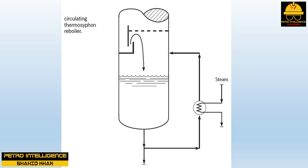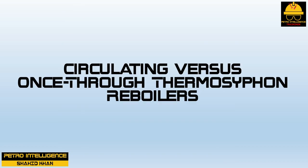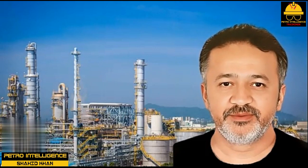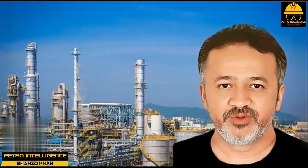However, should the tower bottom liquid level reach the reboiler return nozzle, thermosyphon flow will be restricted or even stop. This will reduce the reboiler heat duty and cause the tower pressure to drop, sometimes causing the tower to flood.